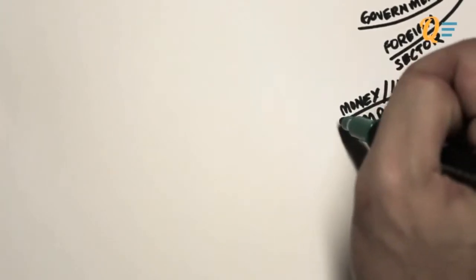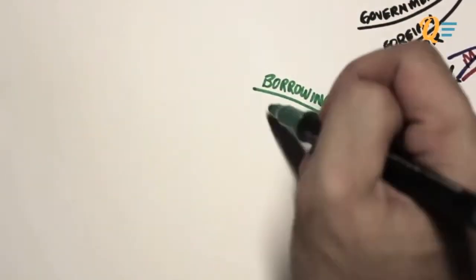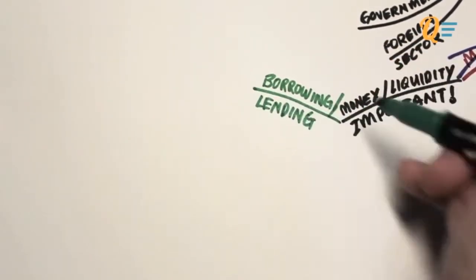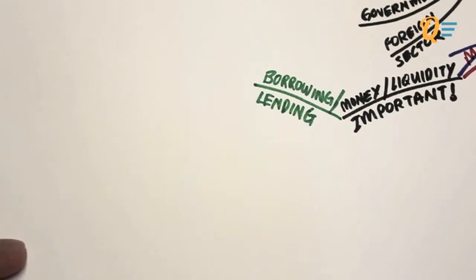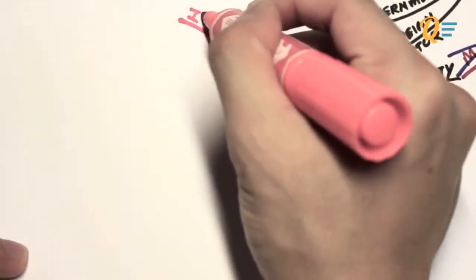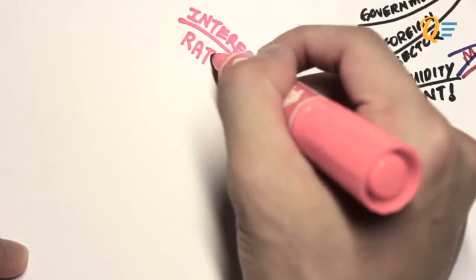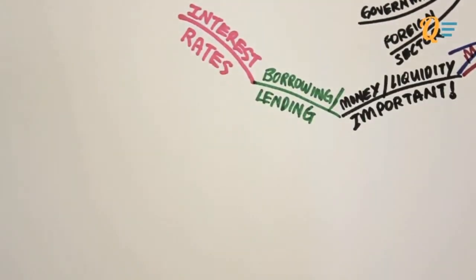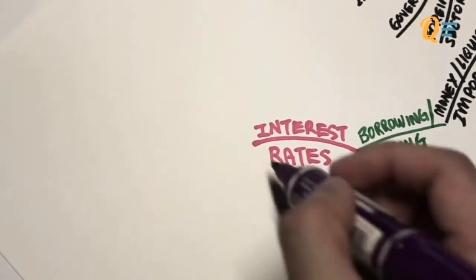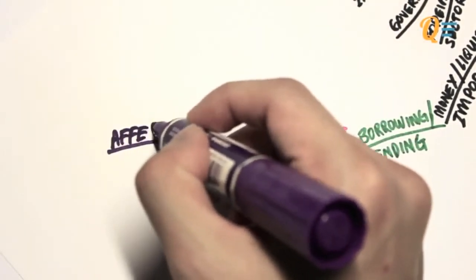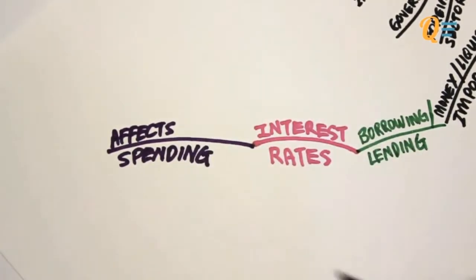With money in the picture, what will occur is borrowing and lending activities. People borrow and lend for many different reasons. When there's borrowing and lending, you have interest rates. If you're going to borrow money, you're going to have to pay interest, and if you lend money, you're going to be earning interest income. Interest rates actually affect the level of spending in the economy.